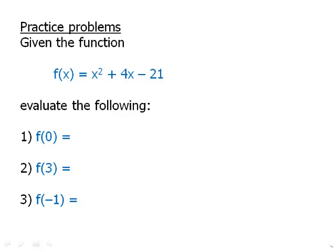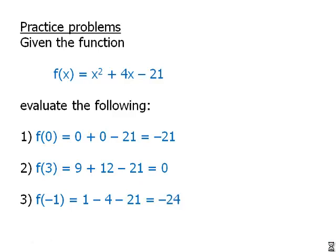Okay, so when we plug in x equals 0, the first two terms are 0. We just get the negative 21, so f of 0 equals negative 21. f of 3, when we plug that in, we get 9 plus 12 minus 21. All that cancels, and we wind up getting 0. So f of 3 equals 0. That is one of the roots of the function. When we plug in x equals negative 1, we get 1 minus 4 minus 21. When we add all this up, we get negative 24. And so this is the value of the function.